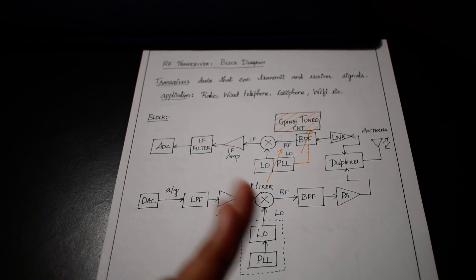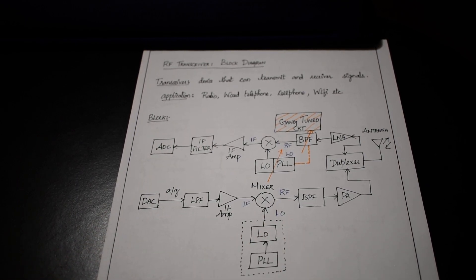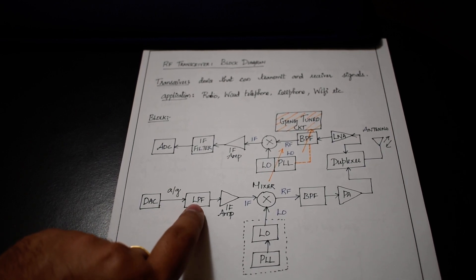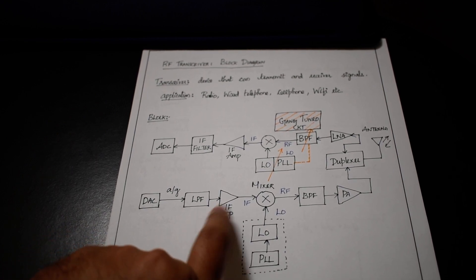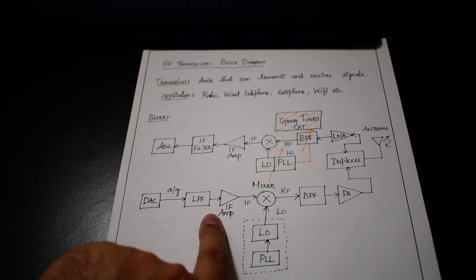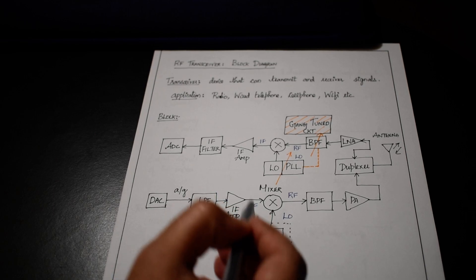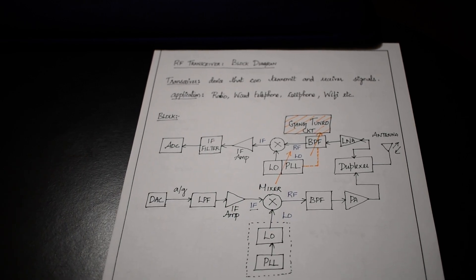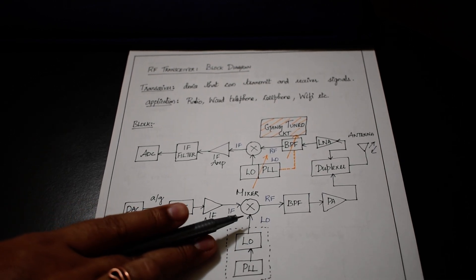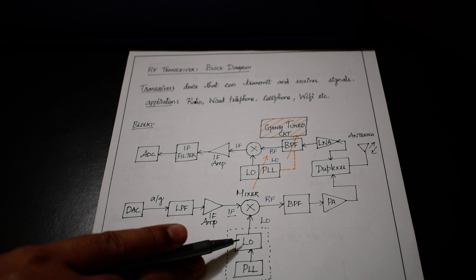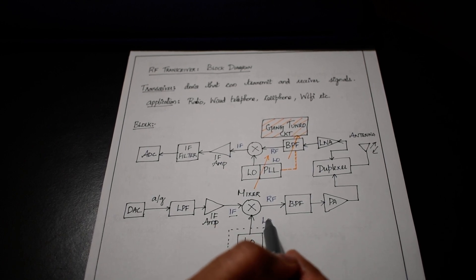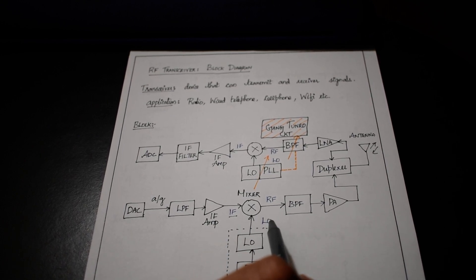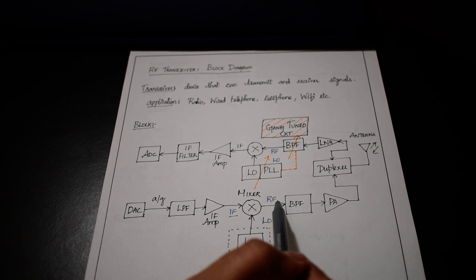The analog signal passes to the low-pass filter. The purpose of the low-pass filter is to cut off the high frequency signals which are not necessary. This low-pass filter outputs the baseband signal, rejecting all the high frequencies. This signal is then boosted using an IF amplifier. The signal that goes past the filter is called the IF signal, and the IF signal is mixed with the local oscillator generated from the PLL and the VCO.